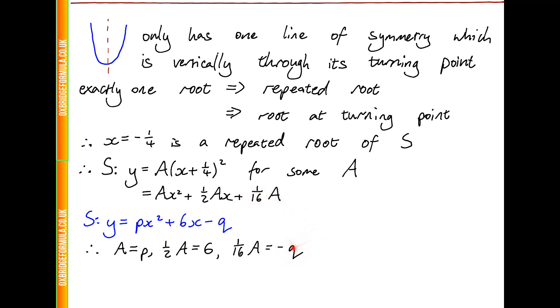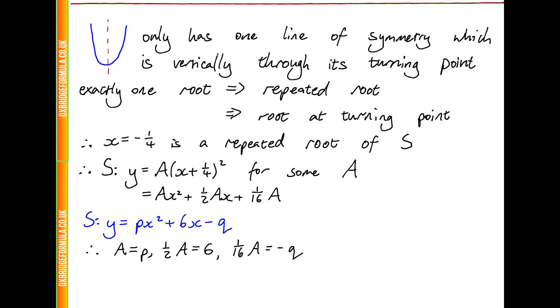And now using this information, we can solve for p and q, and therefore find p plus 8q. So how can we solve this for p and q? Well, the fact that a half a equals 6 tells us that a must equal 12. a equals p, so therefore p equals 12. And q is equal to minus a sixteenth times a, if we move that minus 1 onto the other side. So q is equal to minus 12 divided by 16, and we can simplify that fraction to minus 3 quarters. So p is 12, and q is minus 3 quarters.